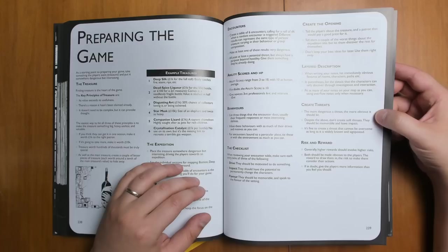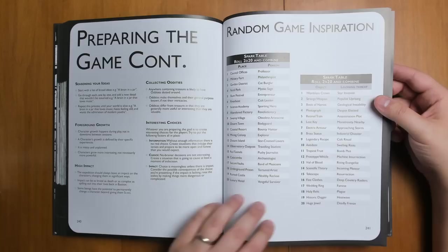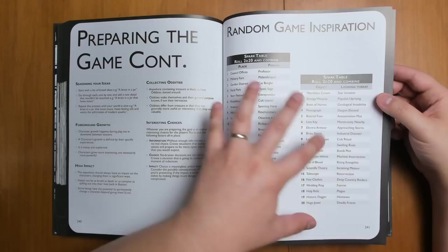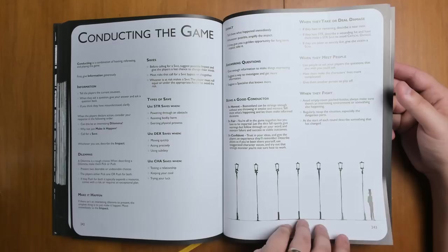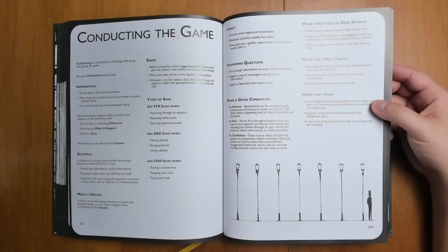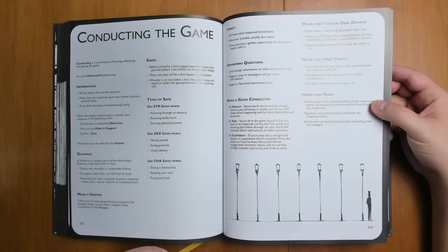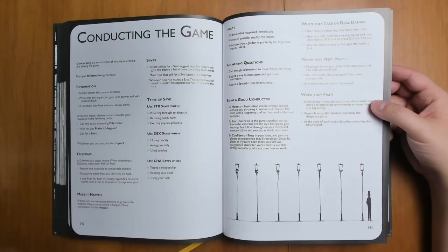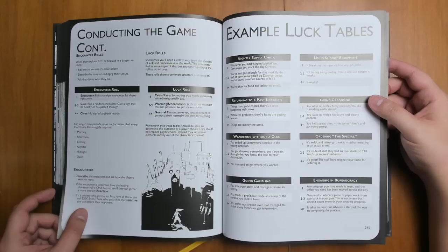Some more ideas here. Random game inspiration. You can just start creating adventures by putting some of these words together. More advice on conducting the game and how the different mechanics work. Answering questions. Give enough information to make things interesting. Suggest a way to investigate and get more information. Suggest a specialist that knows more. The focus on giving players enough so that they can actually move forward and make choices is hugely emphasized throughout the book.